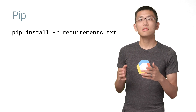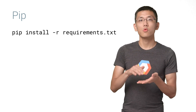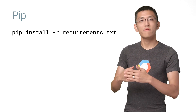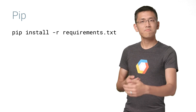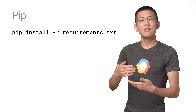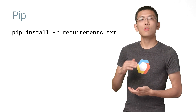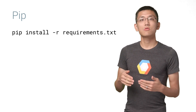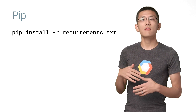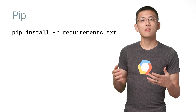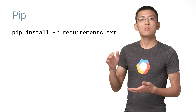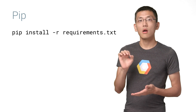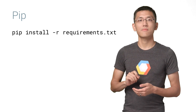Sometimes you may see a file called requirements.txt in someone's folder of Python scripts. Typically, that file outlines all of the PIP packages that that project uses, so you can easily install everything needed by using pip install -r requirements.txt.